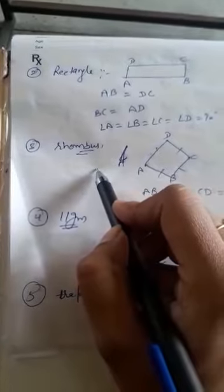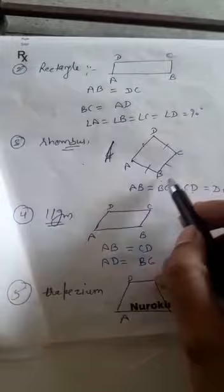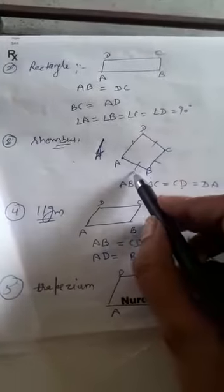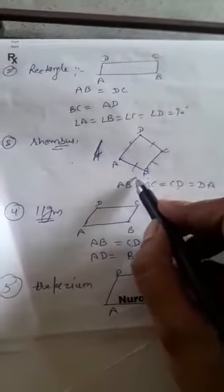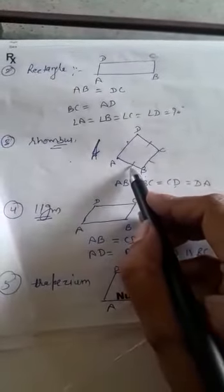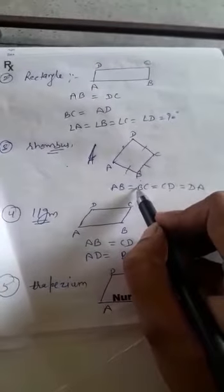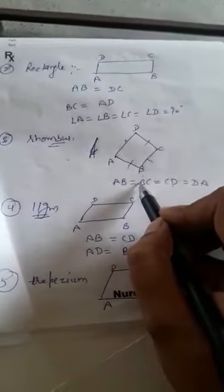The third type is a rhombus. A rhombus is a quadrilateral in which all sides are equal. Note that in both a square and a rhombus all sides are equal, but the difference is that in a square each angle is 90 degrees, whereas in a rhombus the angles may or may not be 90 degrees.